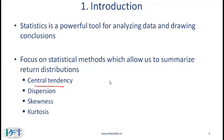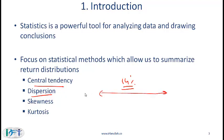Let's say the stock market has returned on average 14% over the last 10 years. Obviously we are concerned with that average number. We are also concerned with dispersion, which tells us how spread out the data has been. One of the simplest measures of dispersion is range — for example, if over the last 10 years the stock market return has ranged between minus 20% and plus 35%, that is also important for us to know.